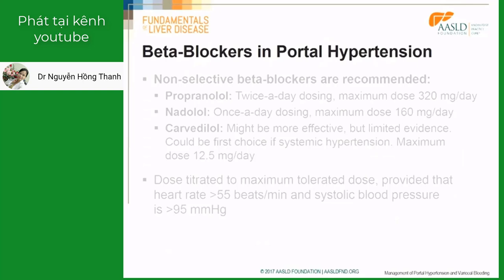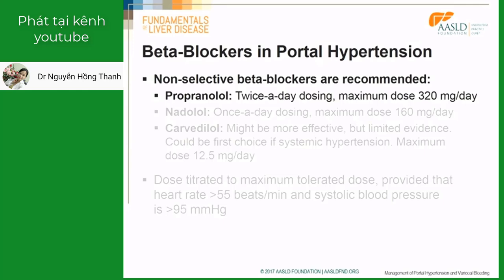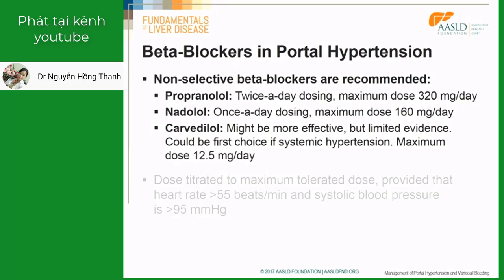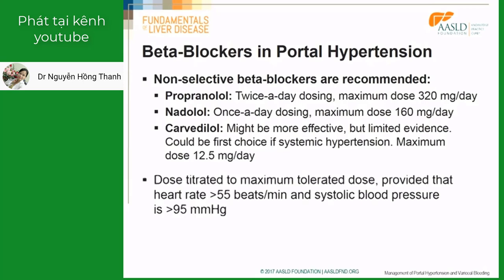So how do we use beta-blockers in these patients? Non-selective beta-blockers that have been tested in the prevention of first bleeding are propranolol, dosed twice a day with a maximum dose of 320 mg per day, and nadolol, which has the advantage of once-a-day administration with a maximum dose of 160 mg. Carvedilol is a non-selective beta-blocker with also alpha adrenergic blocker activity; since carvedilol is more effective in decreasing arterial pressure, it could be the first choice if patients have systemic hypertension. The maximum dose in primary prophylaxis should be 12.5 mg per day. The dose of beta-blockers should be individualized by titrating to the maximum tolerated dose, provided that heart rate does not go below 55 beats per minute and systolic blood pressure does not decrease below 95 mmHg.